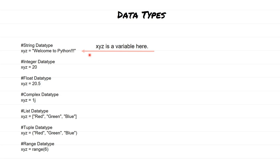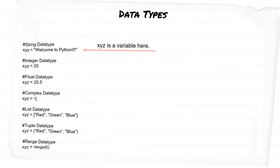One thing you would have noticed is that from one data type to another there is no segregation. Depending on the value which you have, Python is going to automatically assume the correct data type. For example, if you type xyz = 'Welcome to Python', Python understands it is a string. If you want to see what type a variable is, there is a function called the type function — using that we can see what the data type is.